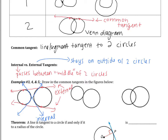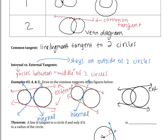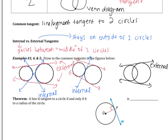For Example 4, there are two external tangents and one internal tangent that goes right through the middle — three common tangents total. For Example 5, there are two tangents, both external. Hopefully those went well; if not, hopefully you can see what mistake you made.